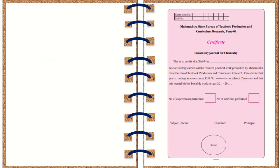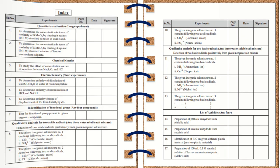First, you will get the certificate on the first page of the journal. You should write your complete name, roll number, and all the necessary details that the certificate requires. The next page is the index, which is in tabular form. The index has columns for serial number, name of the experiment in printed format, page number, date, and signature.